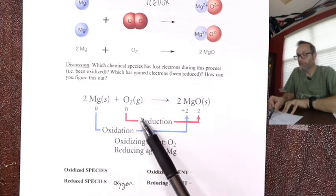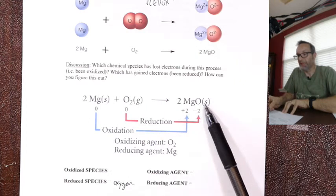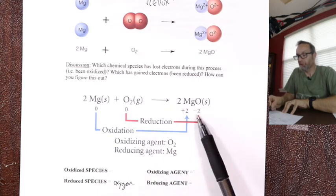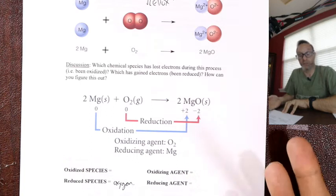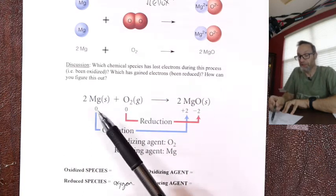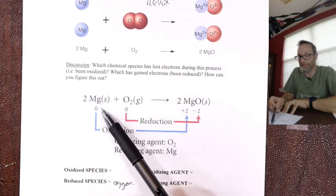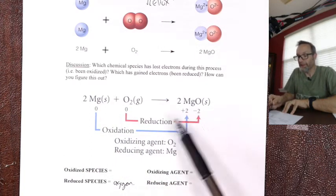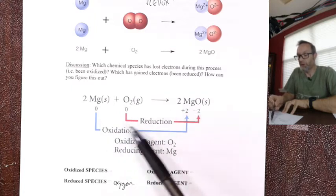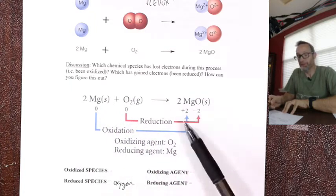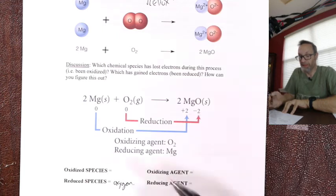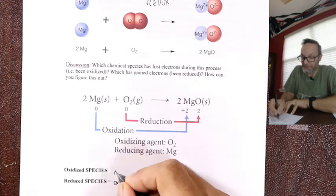Reduction is gain — we just talked about oxygen. It went from a zero to a minus 2 charge, so it gained electrons, which are minus. Look at magnesium — magnesium goes from a zero to a plus 2. Oxidation is loss — it must have lost minuses to become more plus. So magnesium was oxidized.